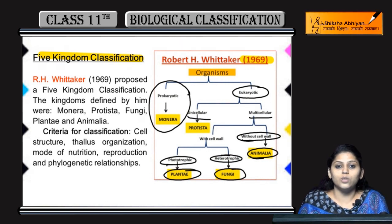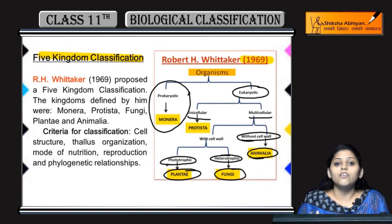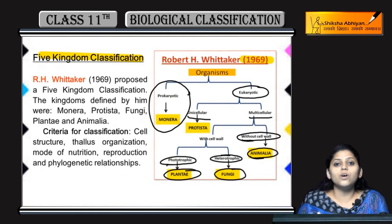And finally, R.H. Whittaker ka five-kingdom system of classification, jismein unicellular, multicellular, prokaryotes, eukaryotes, with cell wall, without cell wall — in sabhi organisms ko alag-alag classify kiya.